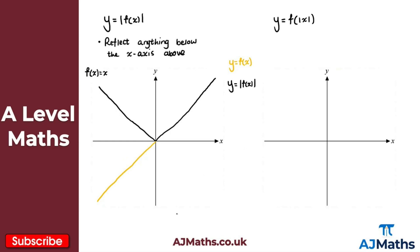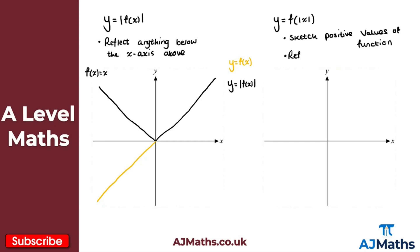That's the first case. Now let's take a look at the second case: the modulus of just the argument of the function. What we do here is reflect everything to the right of the y-axis in the y-axis. So all we do is sketch our function for positive values of x and then reflect that in the y-axis. We get the positive values of the function and then reflect in the y-axis.